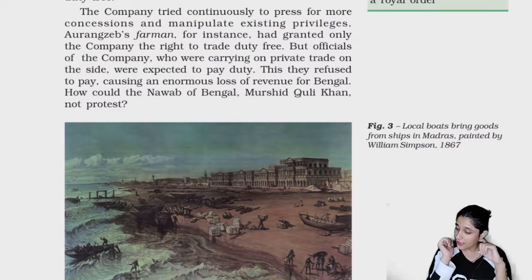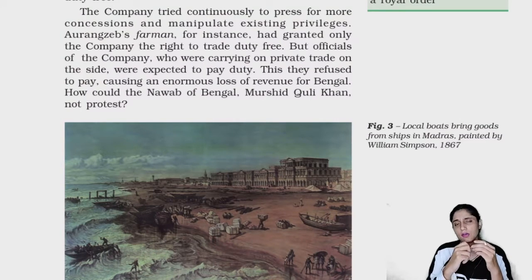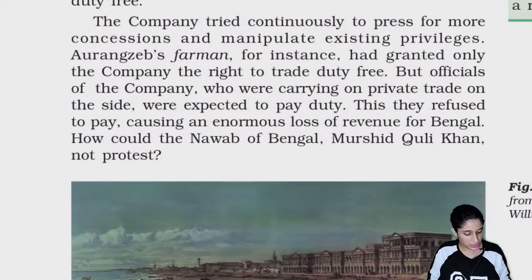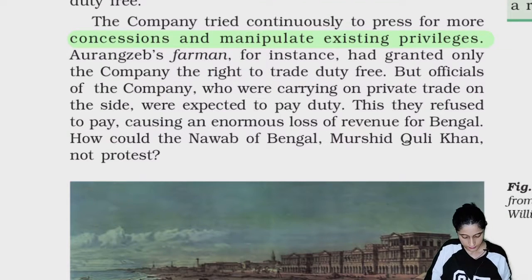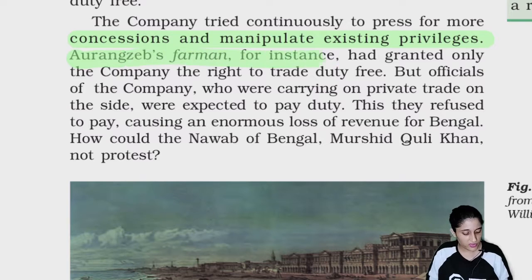What did we learn about Aurangzeb? The company tried continuously to pray for more concessions and manipulate existing privileges. One benefit — without taxing the company, now the knowledge of the British East India Company. He said that we need more privileges, more benefits. Aurangzeb's farman, for instance, has granted the company the right to trade duty-free.